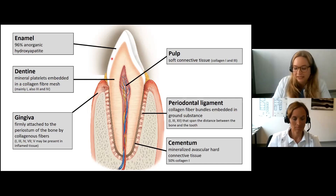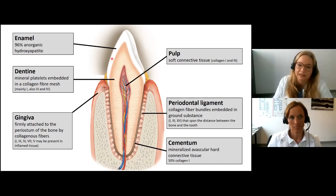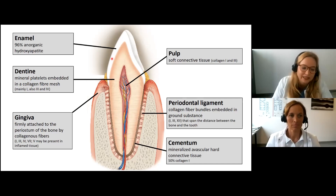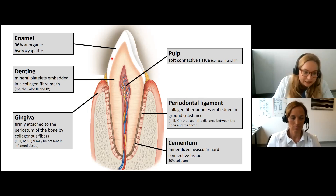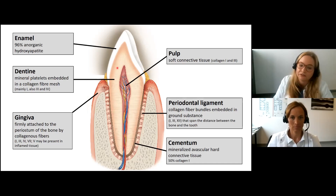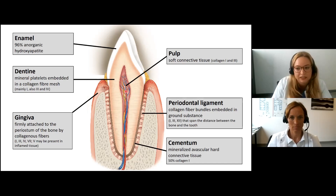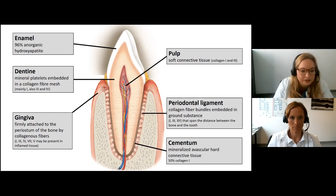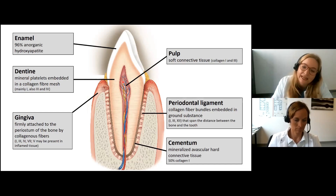Enamel forms the outer layer of the tooth crown and mainly consists of 96% inorganic hydroxyapatite — it is the hardest tissue of the body. Dentine forms the bulk of the tooth and is composed of 70% hydroxyapatite crystals embedded in a three-dimensional collagenous network. The dental pulp is a soft connective tissue with collagen type 1 and 3, also called the dental nerve. In the second part of the talk, Ines Kapferer-Seebacher will tell you more about the periodontal ligament and periodontitis.